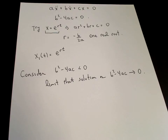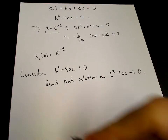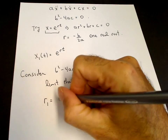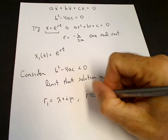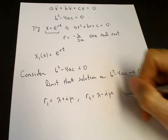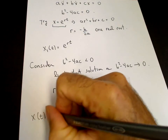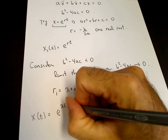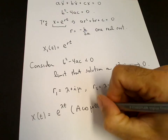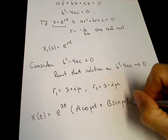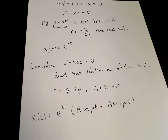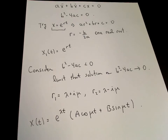When we had complex conjugate roots, we had two roots: r1 written as lambda plus i-mu, and r2 written as lambda minus i-mu. Our solution was x of t equals e to the lambda-t times (a cosine mu-t plus b sine mu-t). And we want to take the limit of this solution as mu goes to 0, where mu is the square root of 4ac minus b squared.